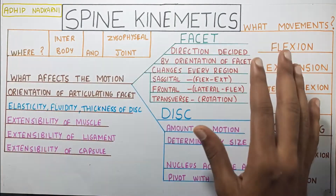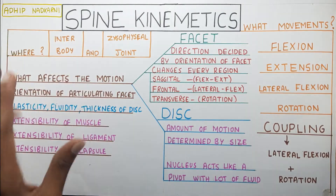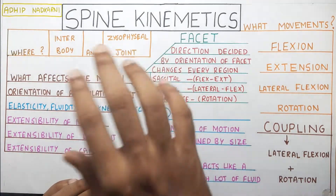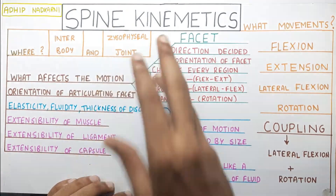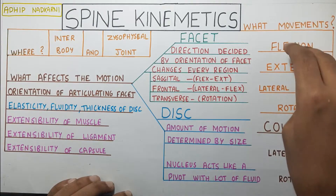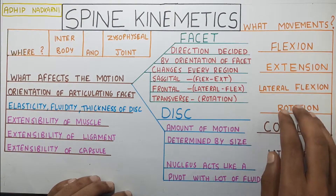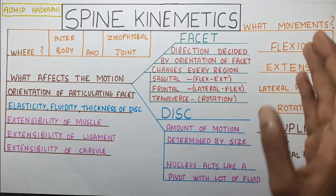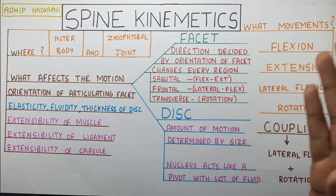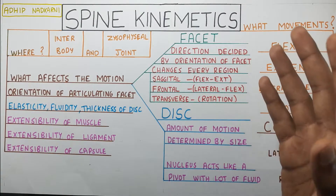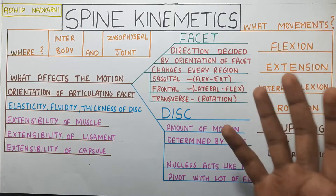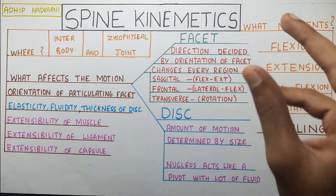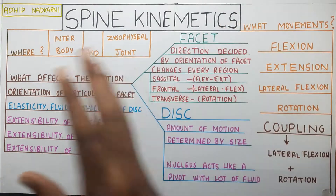Where does this movement occur? Obviously the movement occurs at the joint — the interbody joint and the zygapophysial joint that we talked about in the last video. The movements occurring at the spine are flexion, extension, lateral flexion, and rotation. The movement varies according to the region of the spine: in the lumbar region we have more flexion, in thoracic more lateral flexion, and in cervical more rotation. This happens for a certain reason that we will explore as we go ahead.